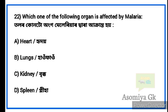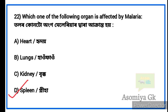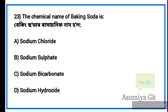Next question: Which organ is affected by malaria? Option D: Spleen. The spleen is the organ affected by malaria.